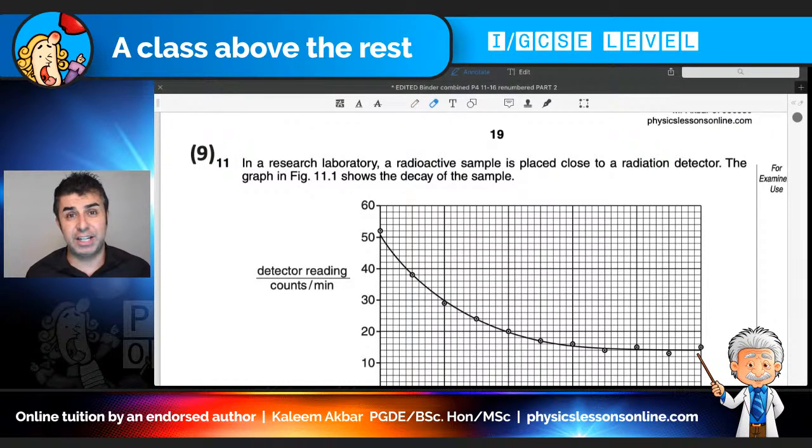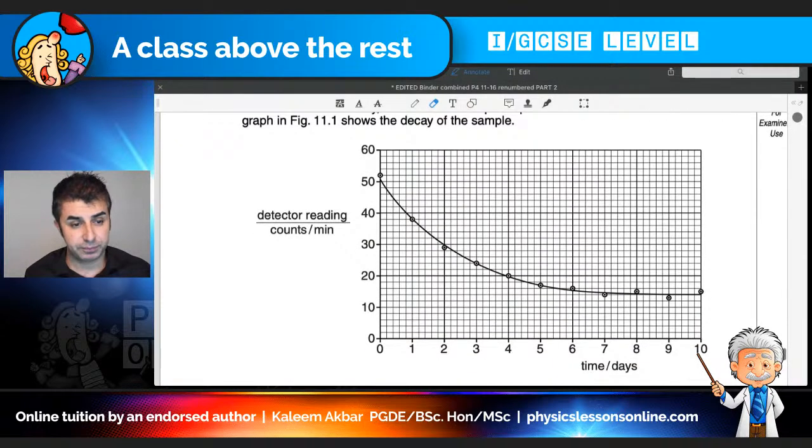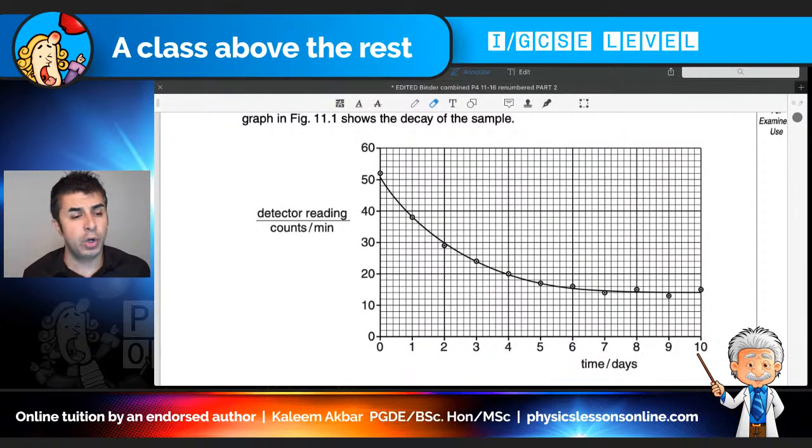The purpose of this video is not only to go over the question but to strike the right balance with giving you some background knowledge as well without completely going off topic. So without further ado let's get stuck right in. In a research laboratory a radioactive sample is placed close to a radiation detector. The graph in figure 11.1 shows the decay of the sample. So on the y-axis we've got counts per minute and on the x-axis we've got time in days.